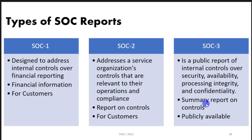The SOC 3 report is the last type and it is a public report — publicly available — and it provides a summary of controls. In a SOC 2 report we may find details about the controls implemented, but in a SOC 3 report we find a statement or a conclusion. In this conclusion we will see something like: the auditor has confirmed that this organization is applying proper controls over confidentiality, availability, and people management. So SOC 3 is publicly available, does not contain too much detail, but includes a conclusion. One example we will discuss now is Amazon Web Services.